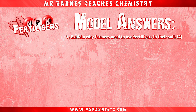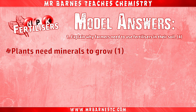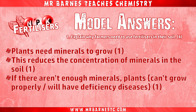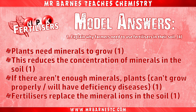Okay, let's go through. Our first marking point is saying what we need minerals for, and that's for plants to grow. The second mark is what happens when plants grow — it reduces the concentration of minerals in our soil. The third mark is for saying what happens when we run out of minerals: plants either can't grow properly or will have deficiency diseases. And then the final mark is for saying what fertilizers do, which is to replace the mineral ions in the soil.